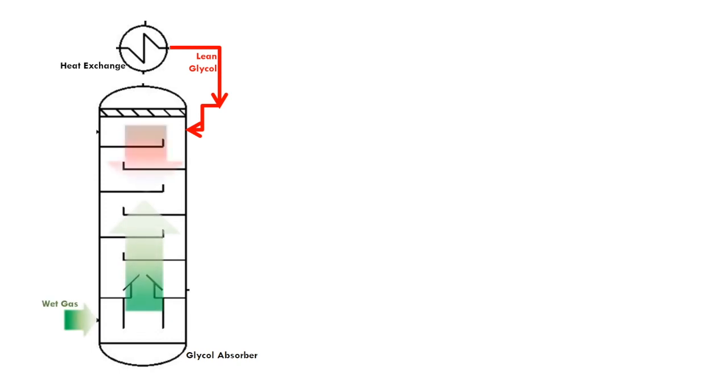Gas will flow up in the opposite direction of the glycol which flows down. The dry gas will exit the top of the absorber. The rich glycol leaves from the bottom of the absorber.